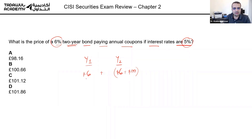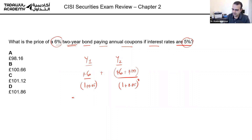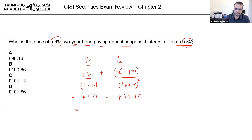The first year cash flow is six dollars discounted by one plus five percent. In the second year it's six dollars over 1.05 to the power of two. So that is 5.71 plus 106 divided by 1.05 squared, which gives us 96.15. Adding these together gives us 101.86.